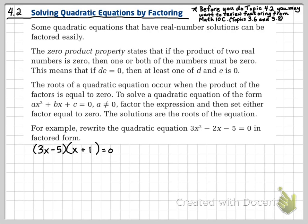Some quadratic equations that have real number solutions can be factored easily. The zero product property states that if the product of two real numbers is zero, then one or both the numbers must be zero. This means that if d times e is equal to zero, then one of d and e must be zero.